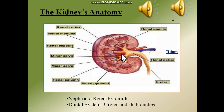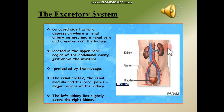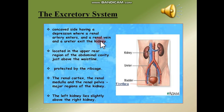The excretory system has two structures known as the kidneys. Kidneys are located in the upper rear region of the abdominal cavity, just above the waistline. On the concave side there is a depression where the renal artery enters and the renal vein and ureter exit the kidney.